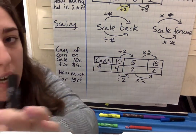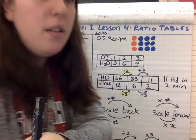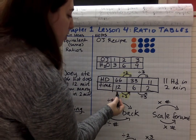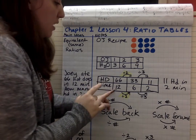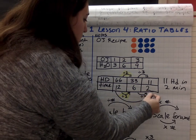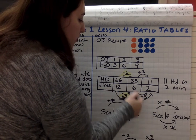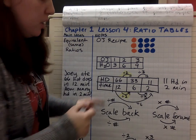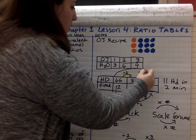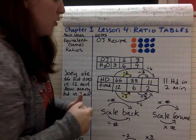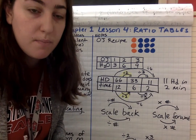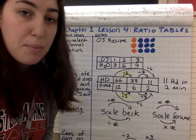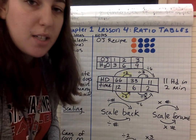That is your lesson for today. One last thing — in the hot dog example, we could have also done it in one step: 12 divided by 6 gives 2, and you would have done the same to the top. There's more than one way to do this — multiple ways. You can do it in one step or two steps; you can scale back or scale forward. We'll work on that today.